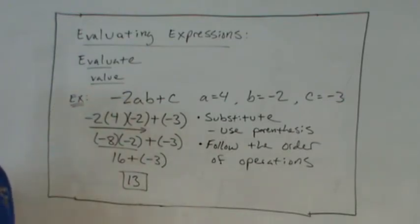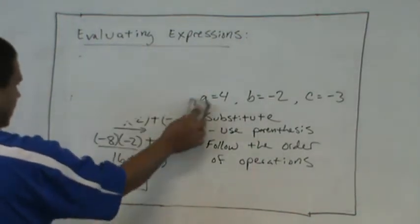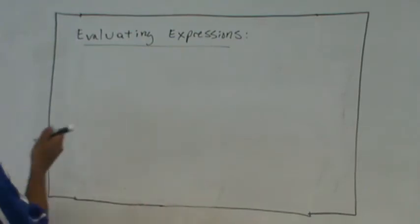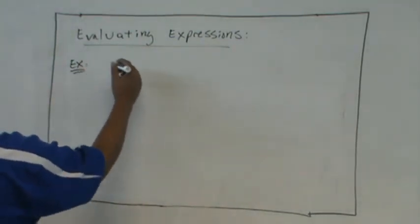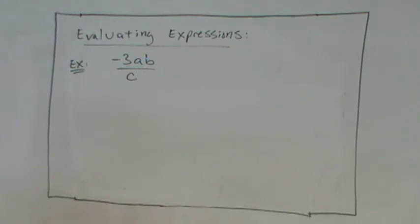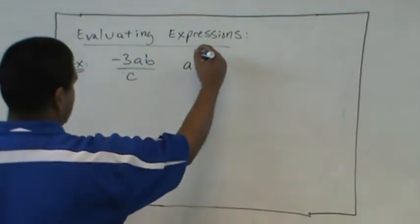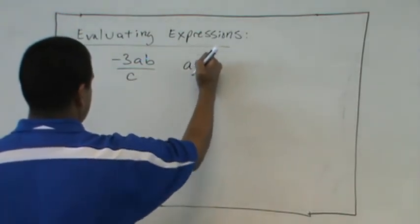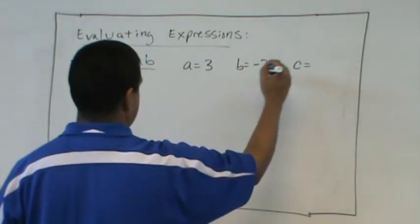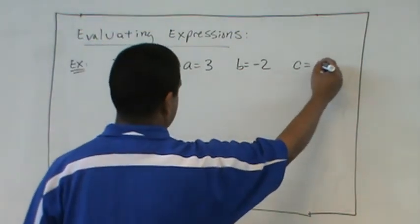Okay? Questions on this example? No. No. So let's do another one. What if we have a division with a fraction in there? What if we have that? Negative 3AB divided by C. And we'll say that A is 3. B is negative 2. And C is negative 3.